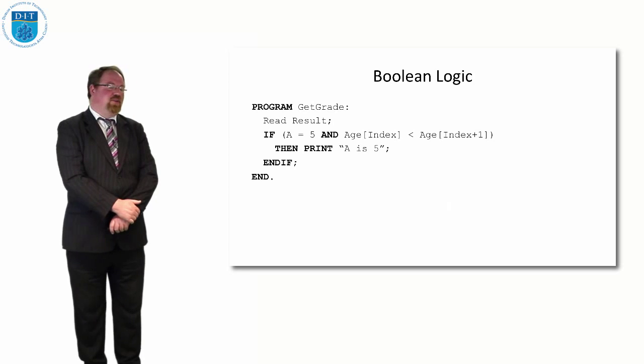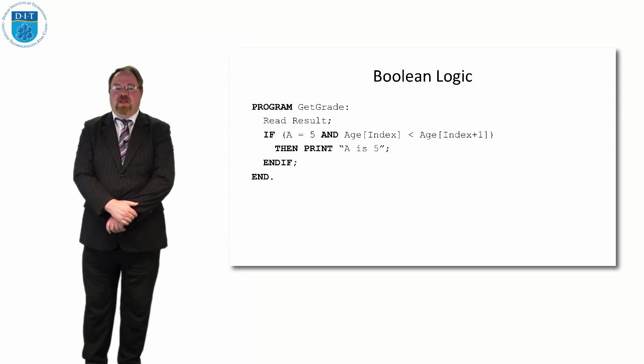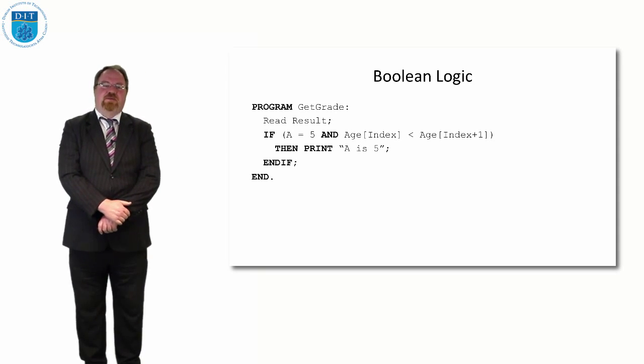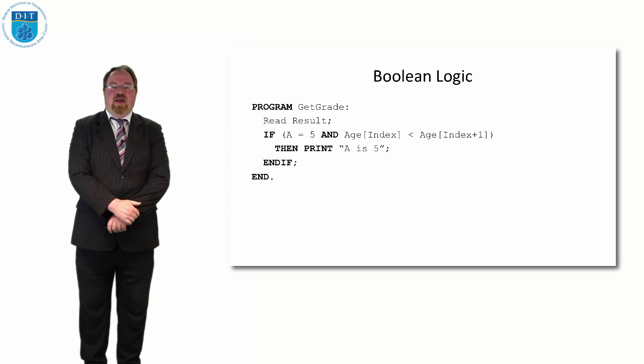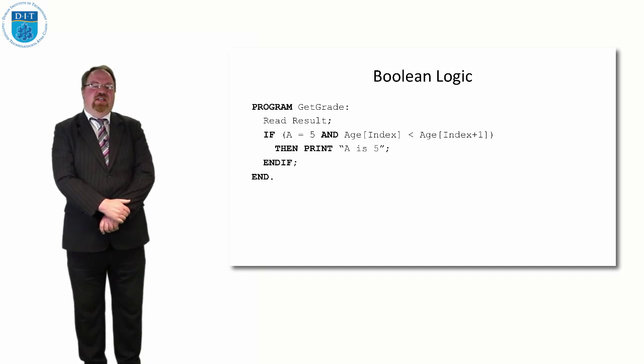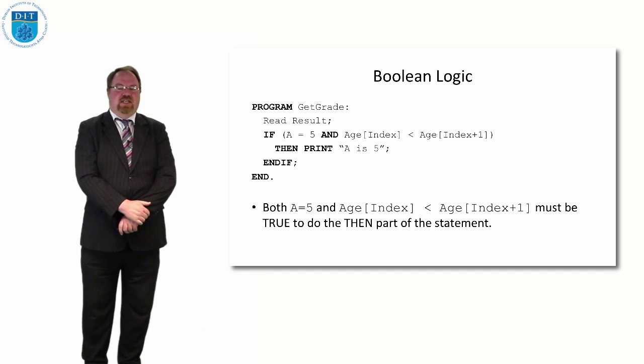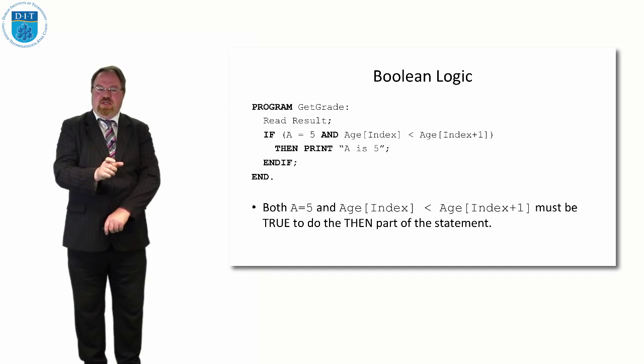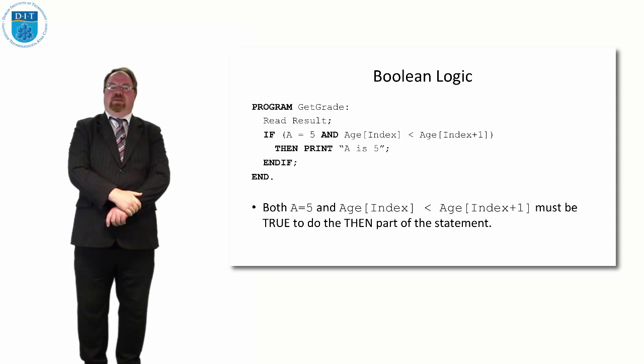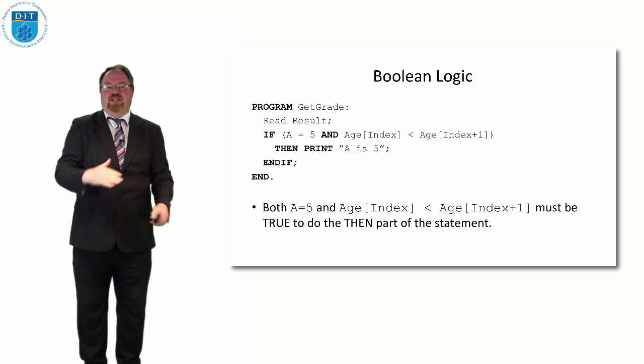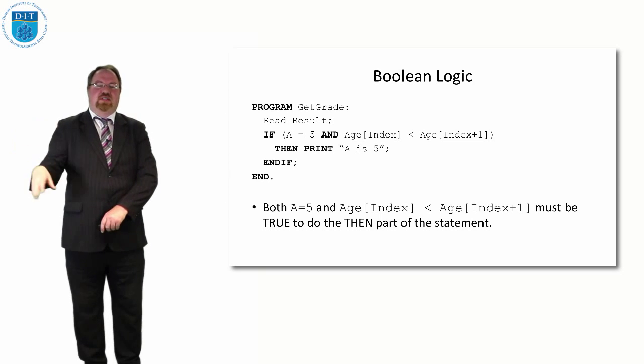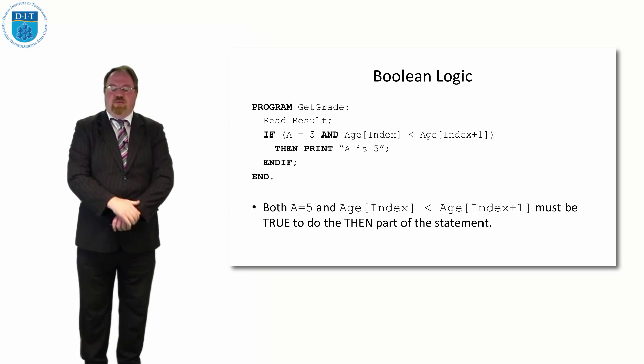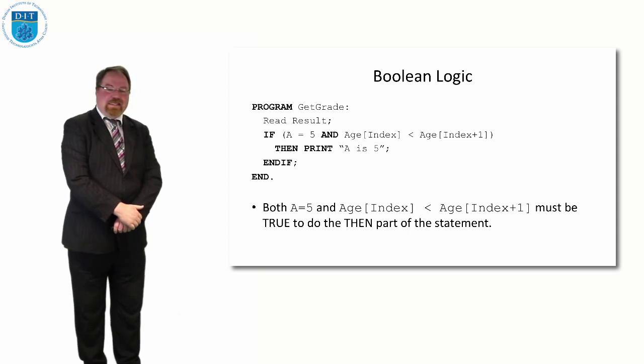So if we were doing an IF statement and we were saying, if A equals 5 AND age index is greater than age index plus 1, what that means is both A equals 5 AND age index less than age index plus 1 must be true for the code to go into the then part. If A is equal to 3, then it won't do the then part, or if age index is greater than age index plus 1, it won't go into the then part. So that's the AND statement.